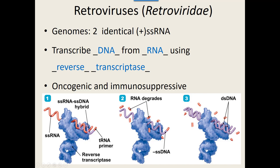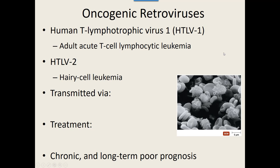The oncogenic retroviruses all cause some type of cancer — that's where they get their name. The first virus in this group is called human T-lymphotropic virus 1 (HTLV-1), which affects your T lymphocytes. It causes a cancer called adult acute T-cell lymphocytic leukemia. Leukemia is an abnormality of your white blood cells. This particular virus causes your white blood cells to grow and divide in an uncontrolled manner — they grow and divide so quickly, with nothing to check them, that they produce non-working, cancerous white blood cells.